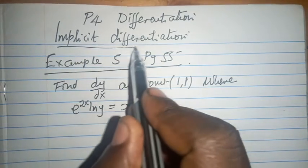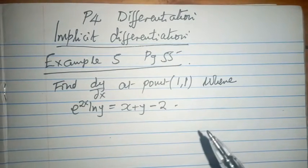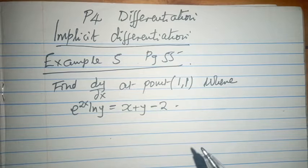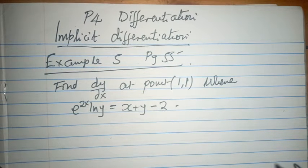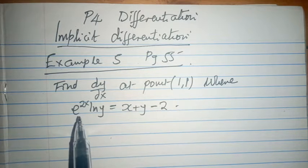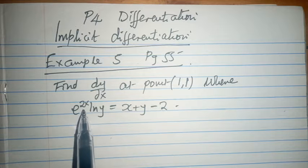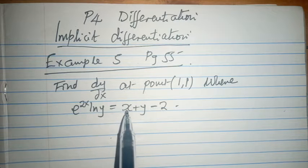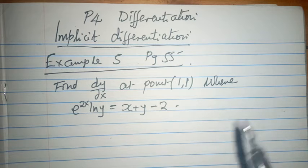We continue to apply implicit differentiation and by now we know what implicit differentiation is all about. We are told to find dy/dx at the point (1,1) where e raised to power 2x ln y equals x plus y minus 2.